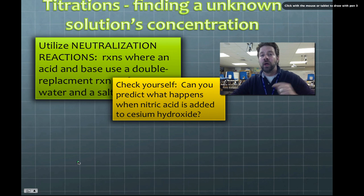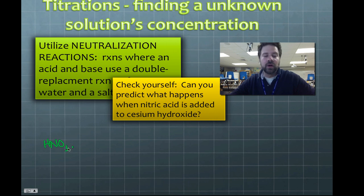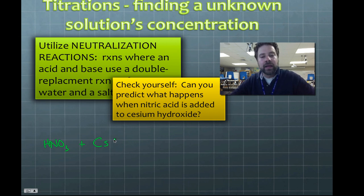Let's try a double replacement reaction: nitric acid added to cesium hydroxide. Nitric acid is HNO3. Cesium hydroxide is CsOH — cesium has a 1+ charge as a group one metal, and hydroxide is 1−, so it balances out nicely.